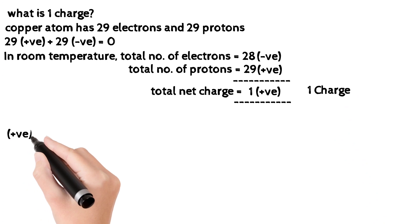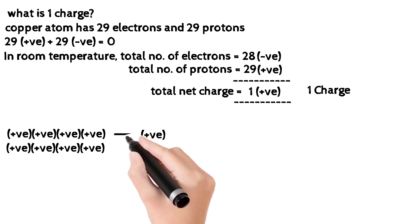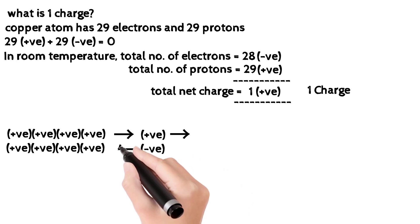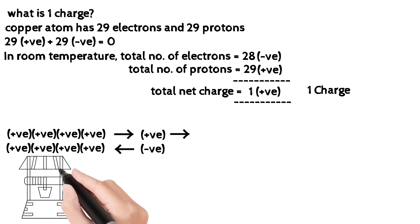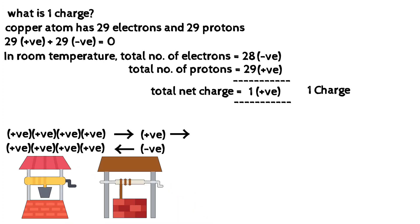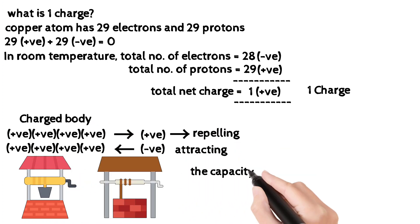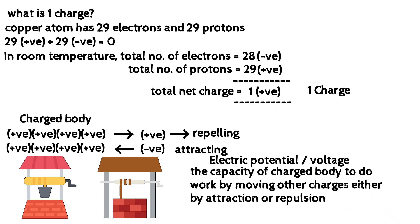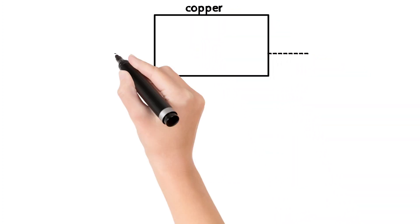A charged body does work by attracting or repelling other charges. This ability is called Electric Potential or Voltage. When we apply voltage, it means a set of charges are placed. For example, we can apply voltage to a copper conductor.